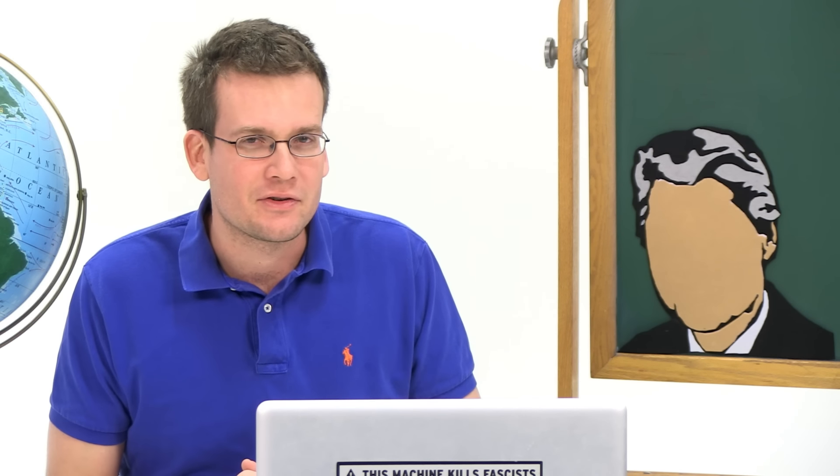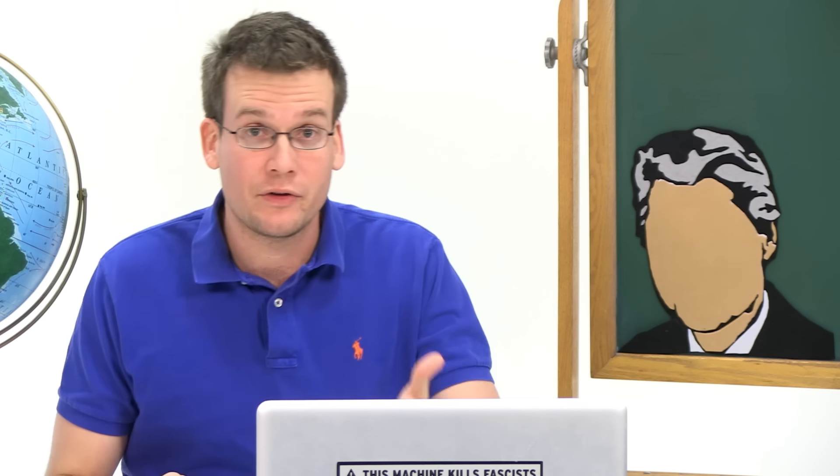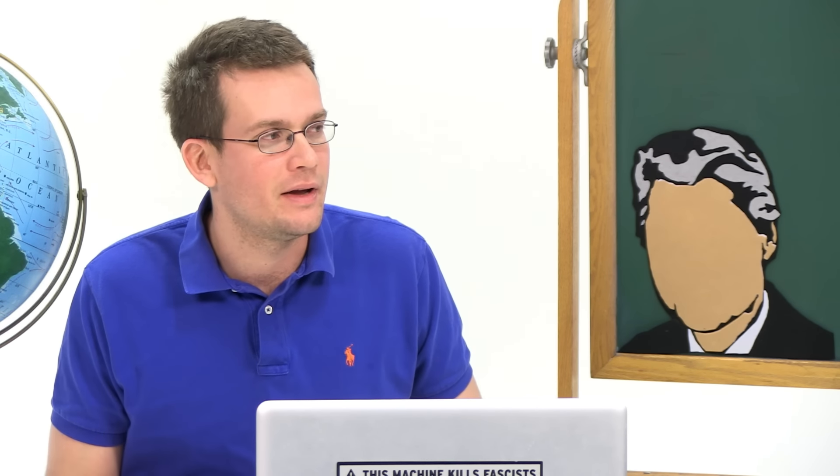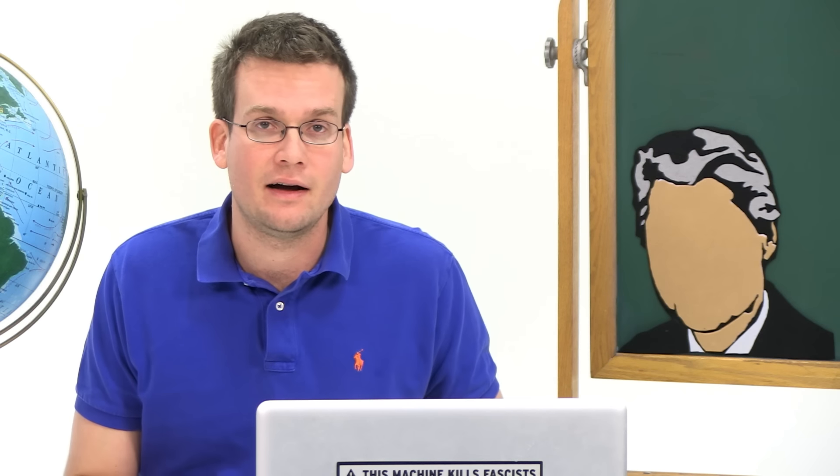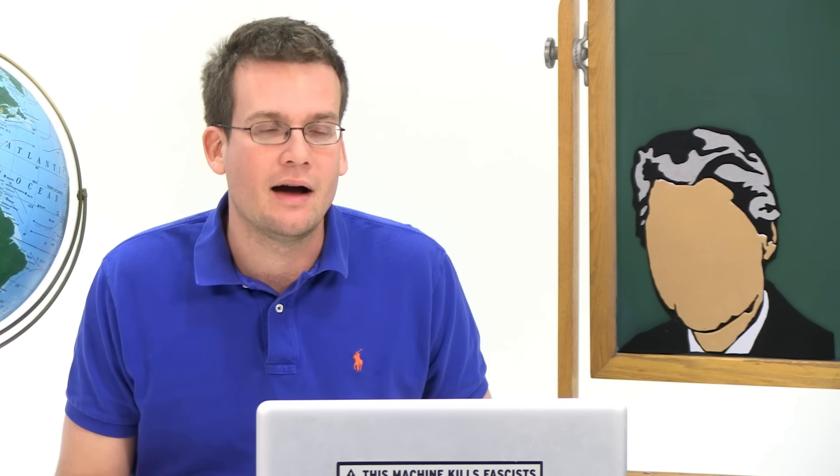Hi, I'm John Green, this is Crash Course U.S. History, and today we have finally reached the Clinton years. Bill Clinton and I are really quite similar, actually. We were both brought up in the South, we both came from broken families—well, no, not actually. Also, I did not attend an Ivy League university. Yeah, I'm actually nothing like Bill Clinton. Well, except for the Southern thing, and also, both of us are married to women who are smarter than we are.